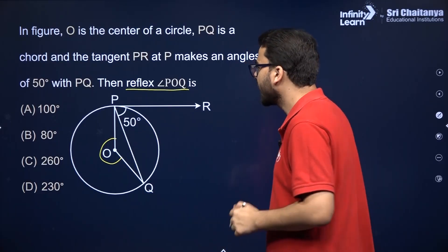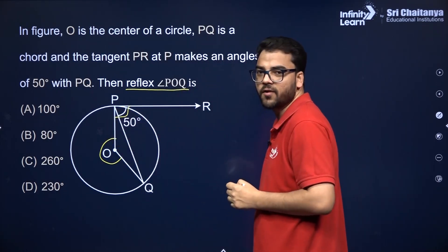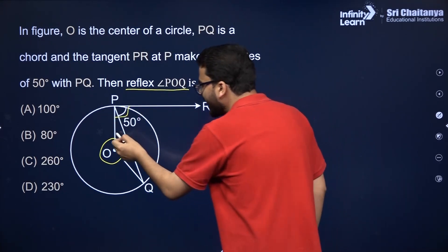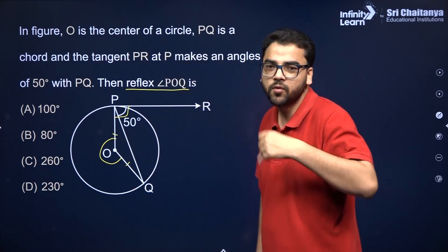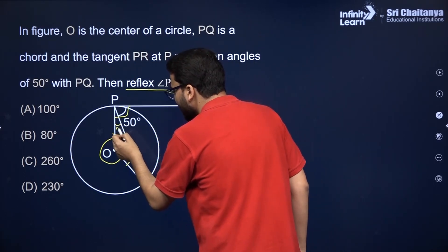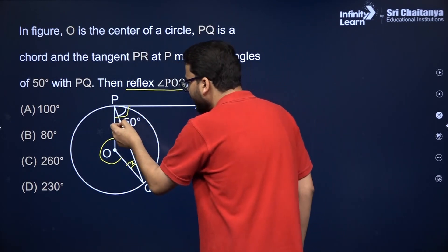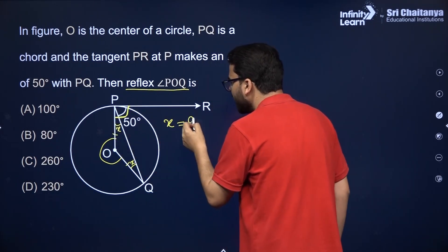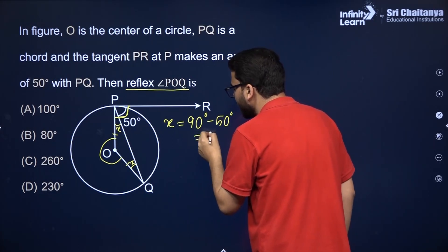The tangent to a circle is perpendicular to the radius through the point of contact, so this angle will be 90 degrees. Radii of the same circle are equal, and angles opposite to equal sides of a triangle are equal. Suppose this angle is x, so the other base angle is also x. The total angle at P is 90, so subtracting 50, x comes out to be 40 degrees.